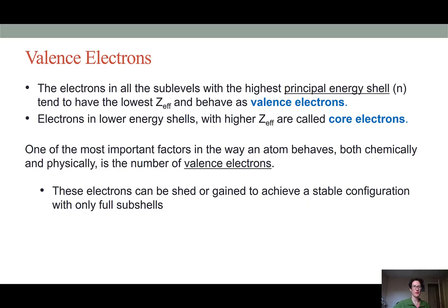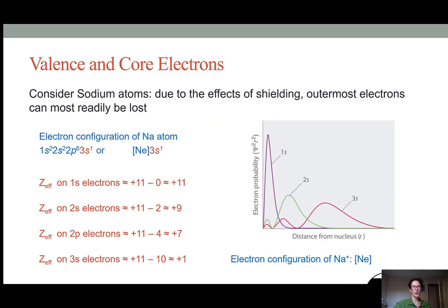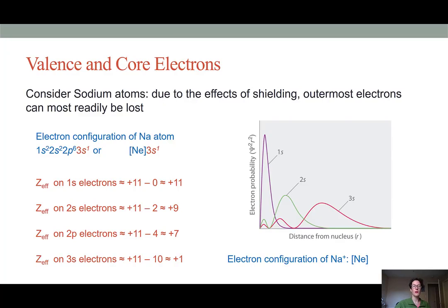To illustrate the role of the effective nuclear charge on whether an electron behaves as a valence electron or a core electron, we're going to look at a sodium atom. So sodium atoms have electron configuration of a full 1s orbital, a full 2s orbital, all three 2p orbitals are full, and then that final 11th electron is in the 3s orbital.